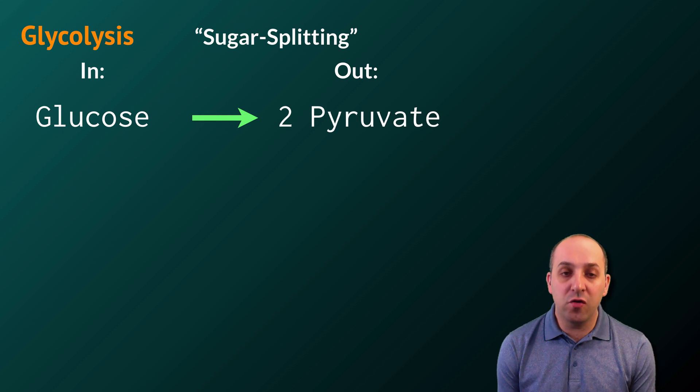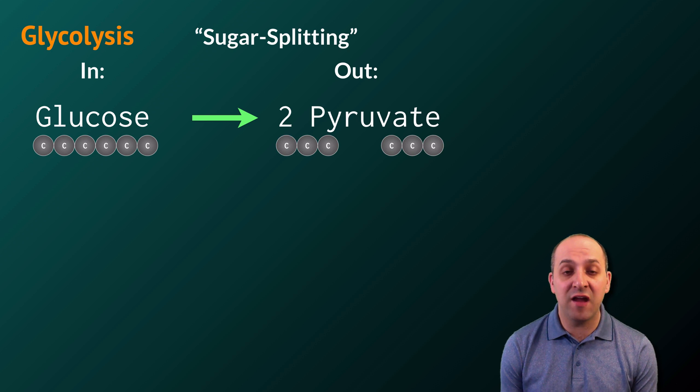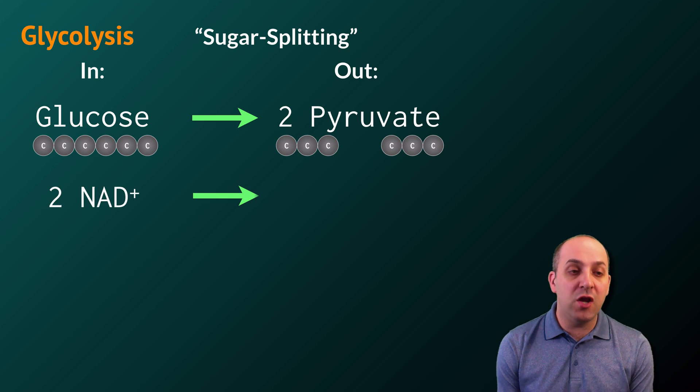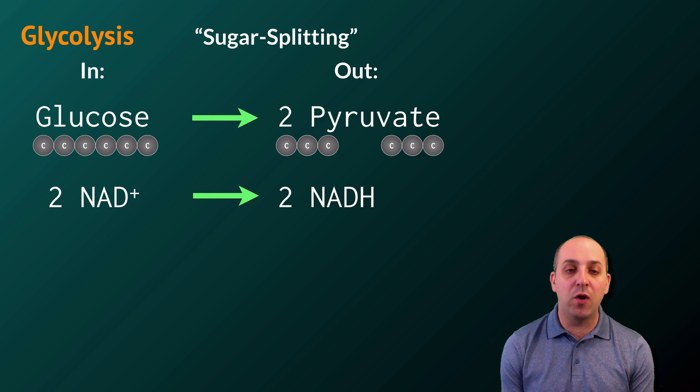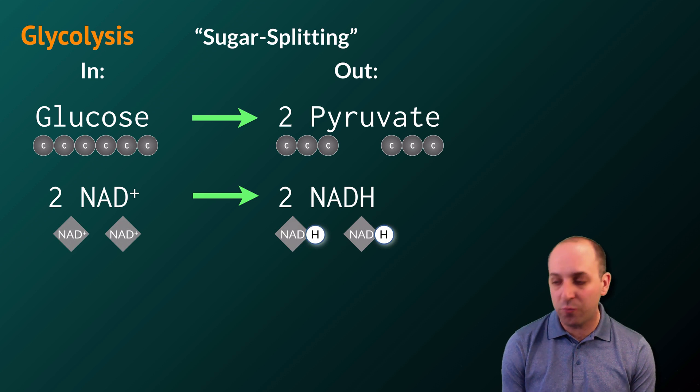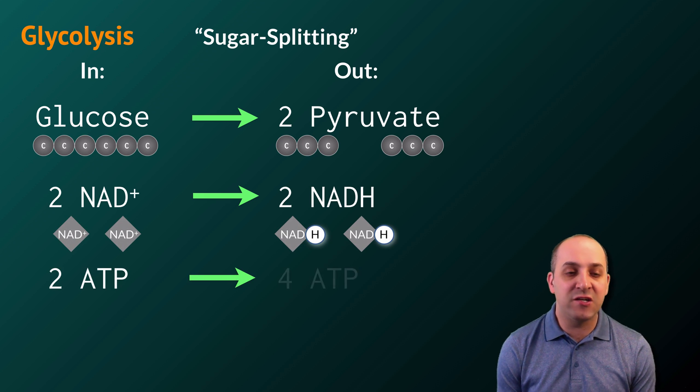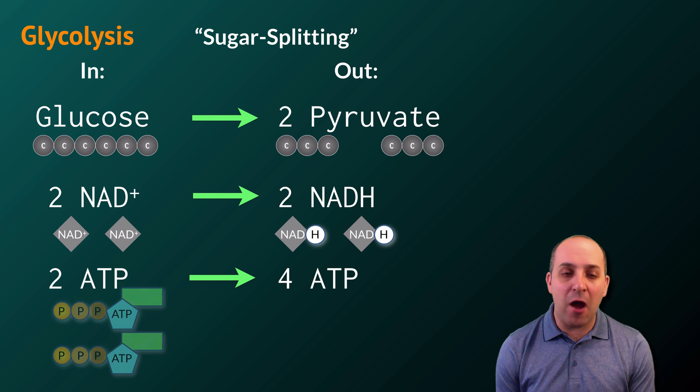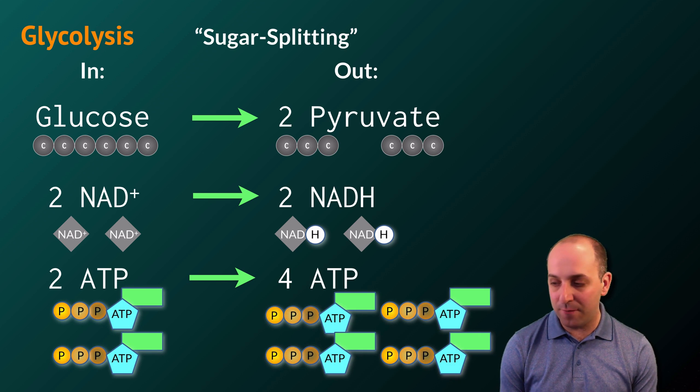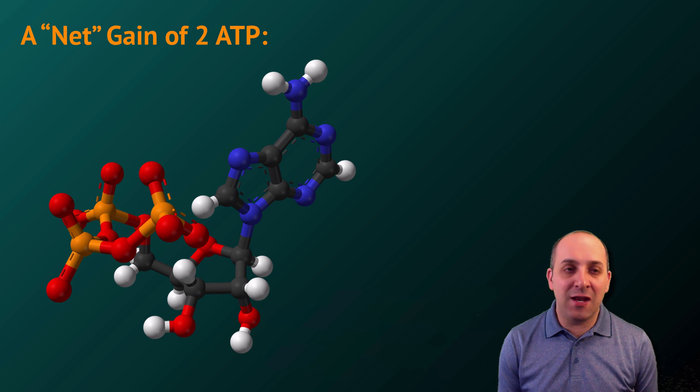We're putting in glucose and we're getting two pyruvate molecules. Glucose has six carbons and each of those pyruvate molecules has three carbons. We're going to put in two NAD plus molecules and we'll get out two NADH molecules as a result. And we're going to invest two ATP, but we're going to get out four ATP at the end. This gives us a net gain of two ATP.